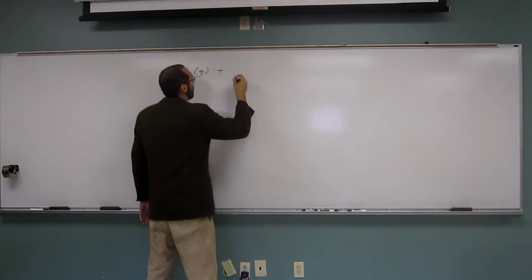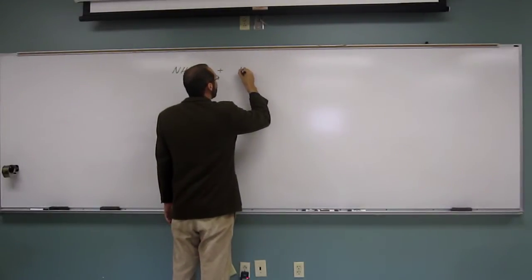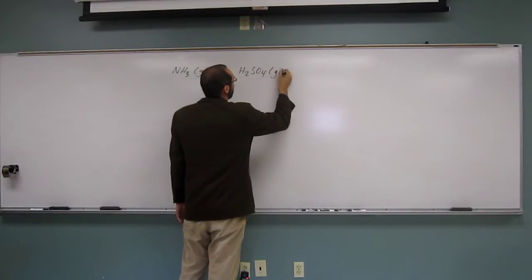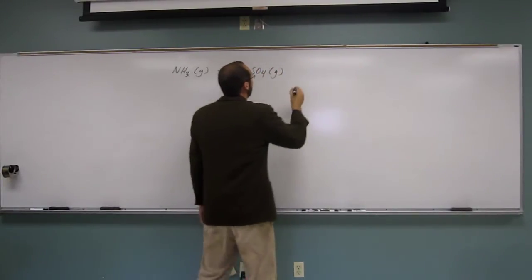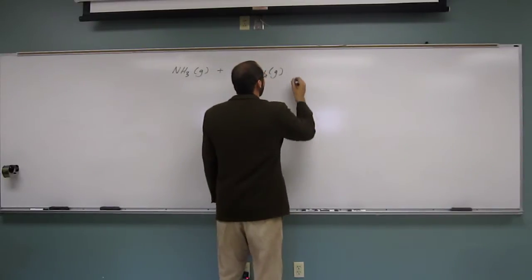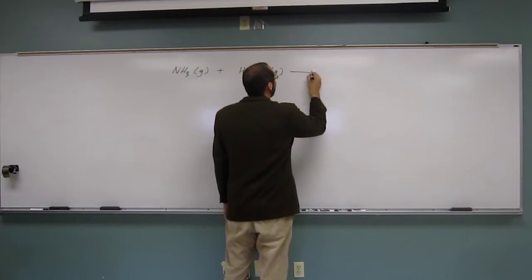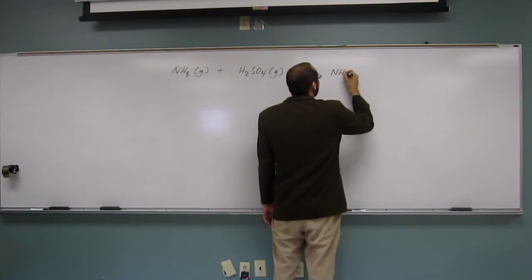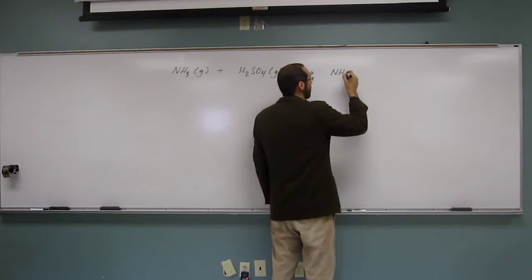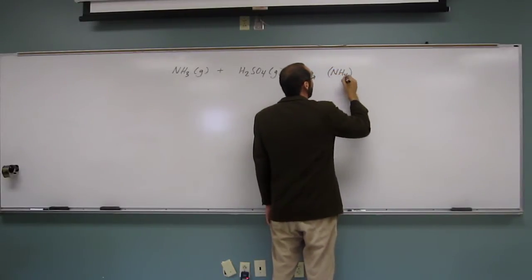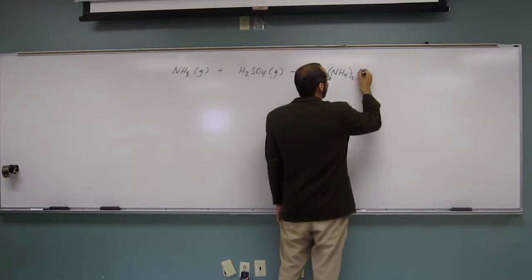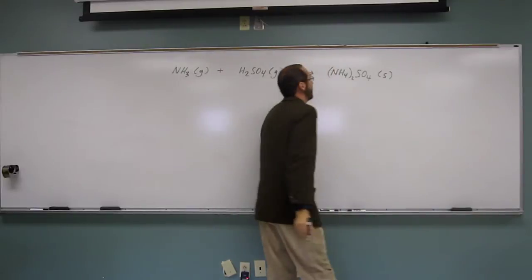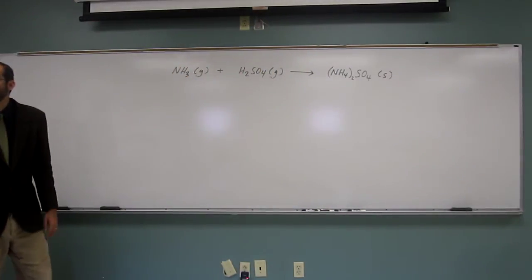And then I'm going to react that with sulfuric acid, and we're also just going to put that in the gaseous form. We can think of this as kind of like a high temperature reaction. And that's going to form ammonium sulfate. The ammonium ion is NH₄⁺, and the sulfate ion is SO₄²⁻. So ammonium sulfate is (NH₄)₂SO₄.